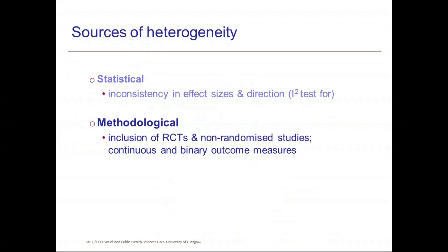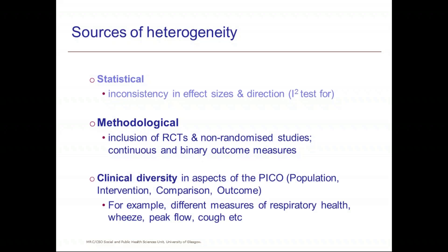Then there's methodological heterogeneity. Increasingly, reviews will include non-randomized studies and not just RCTs, or they might include continuous and binary outcome measures. This can introduce quite high levels of methodological heterogeneity. The advice is that you need to consider and justify whether or not you can combine RCTs and non-randomized studies together. And then there's clinical heterogeneity or clinical diversity.